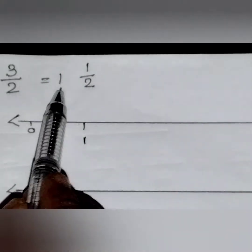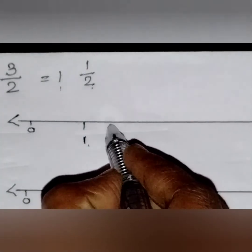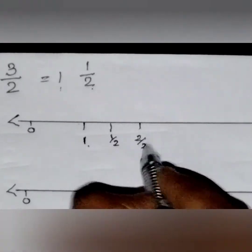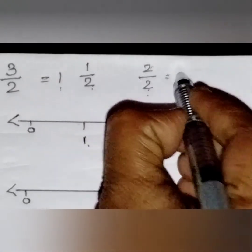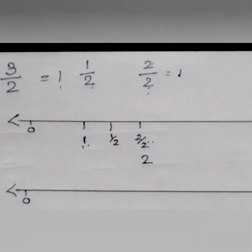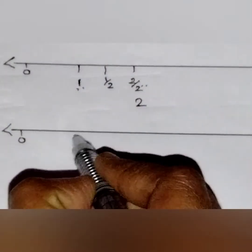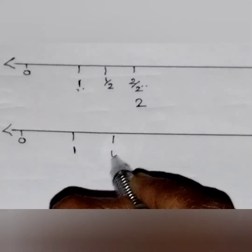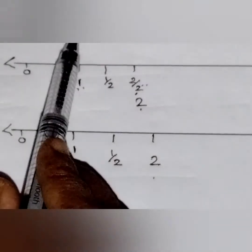So this fraction comes after 1. Now we are going to mark the fraction part: first one is 1/2 and next one is 2/2. When the numerator and denominator are equal, it means the whole number — that is the next whole number. After 1, it is 2. So instead of 2/2, we can also mark it as 2. You can see 1, then 1½, then 2. In between 1 and 2, there is an equal half.